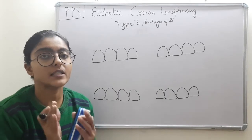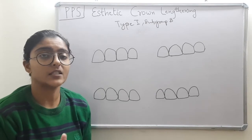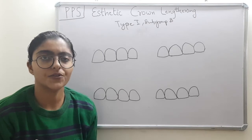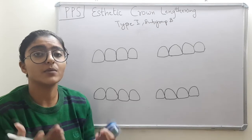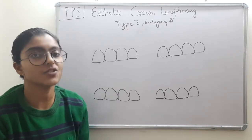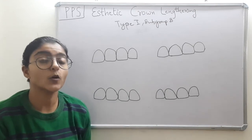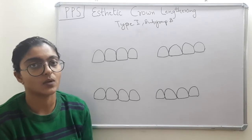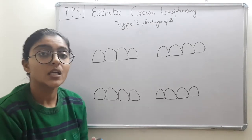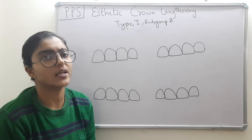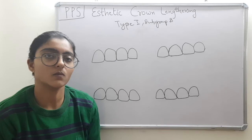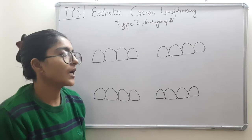Aesthetic crown lengthening is done solely for aesthetic purposes with no enhancement of functionality. Functional crown lengthening is performed when a tooth is badly carious and after root canal treatment and tooth preparation there is hardly any supra-gingival structure left to retain a prosthesis. Today we will discuss only aesthetic crown lengthening. If you want functional crown lengthening discussed as well, please let me know in the comments or on social media.